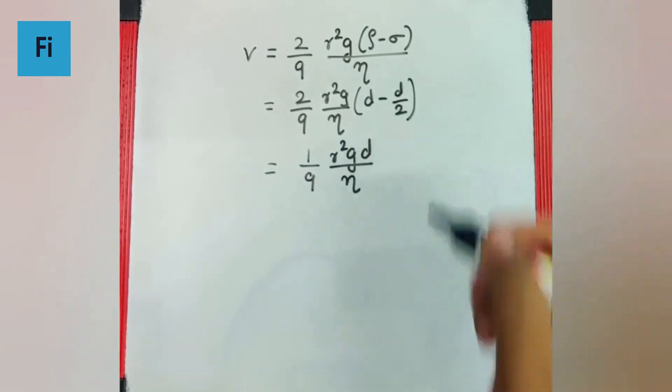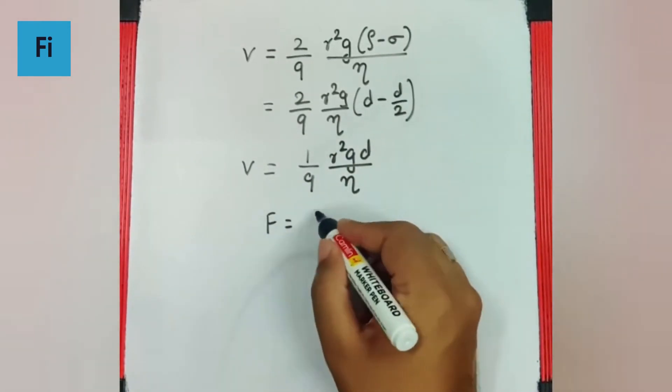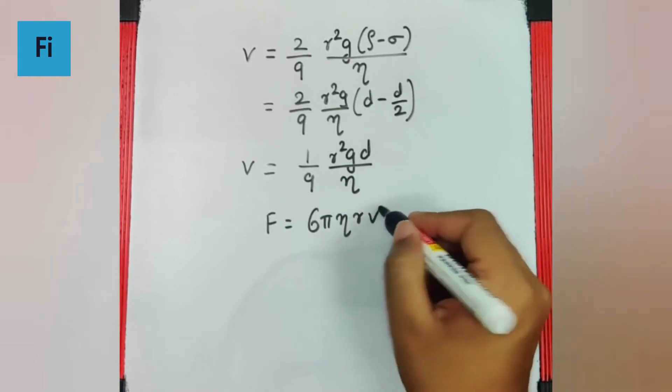Now we know the viscous force formula is 6 pi eta R v.